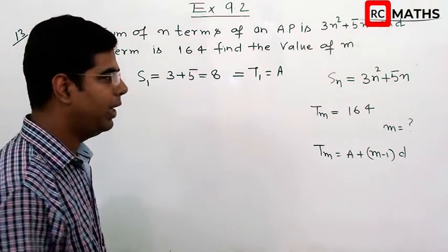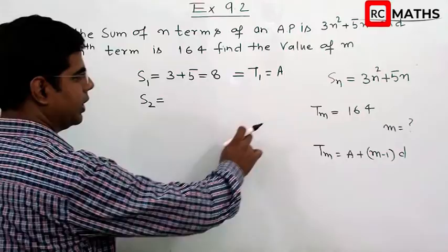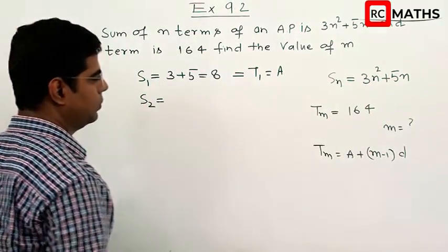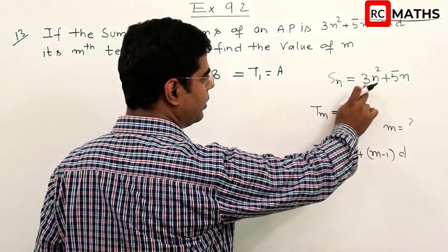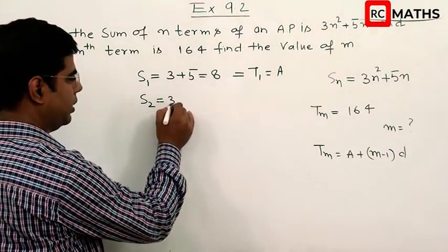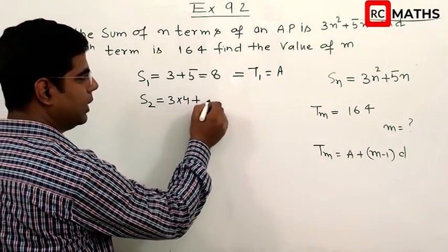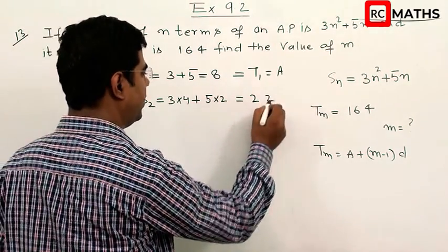Now we will take S2. In S2, we put n equals 2. So 3 into 4 plus 5 into 2, which comes to 22.